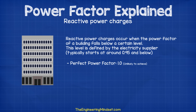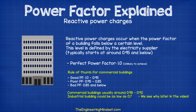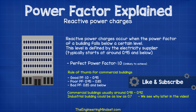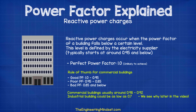In large commercial buildings, the overall power factor is likely to sit in the following categories: good power factor is generally between 1 and 0.95; poor power factor is anything from 0.95 down to 0.85; bad power factor is anything below 0.85. Commercial office buildings are usually somewhere between 0.98 and 0.92. Industrial buildings could be as low as 0.7.